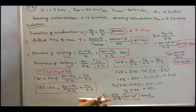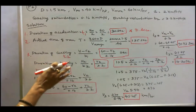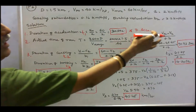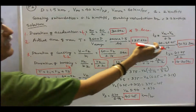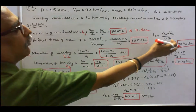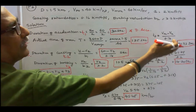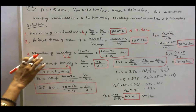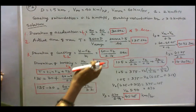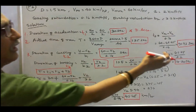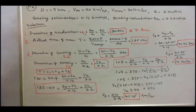Once V2 is known, T2 = (V1 − V2) / coasting retardation = (60 − 45.45) / 0.16 = 90.93 seconds (duration of coasting). Duration of braking T3 = V2 / 3.2 = 45.45 / 3.2 = 14.20 seconds.